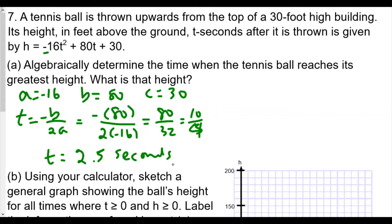We had our maximum height reached after 2.5 seconds. That's the time when the ball reaches the maximum height. But now we have to find the maximum height, so we're going to plug that into our height function. Height equals negative 16 times 2.5 squared plus 80 times 2.5 plus 30.